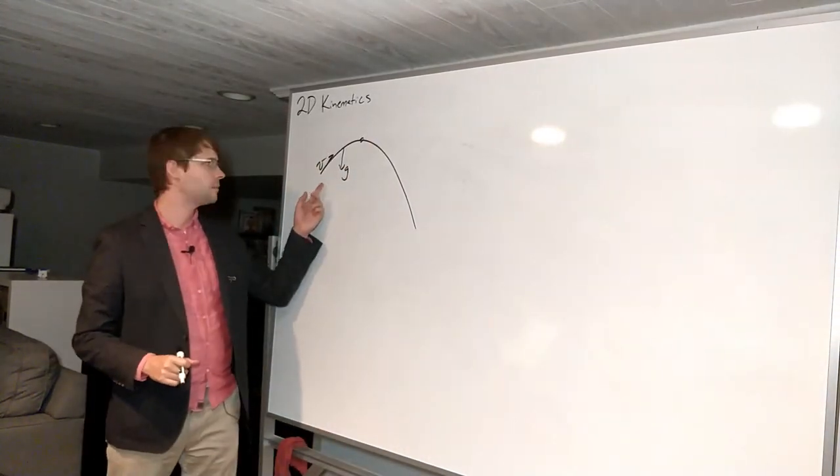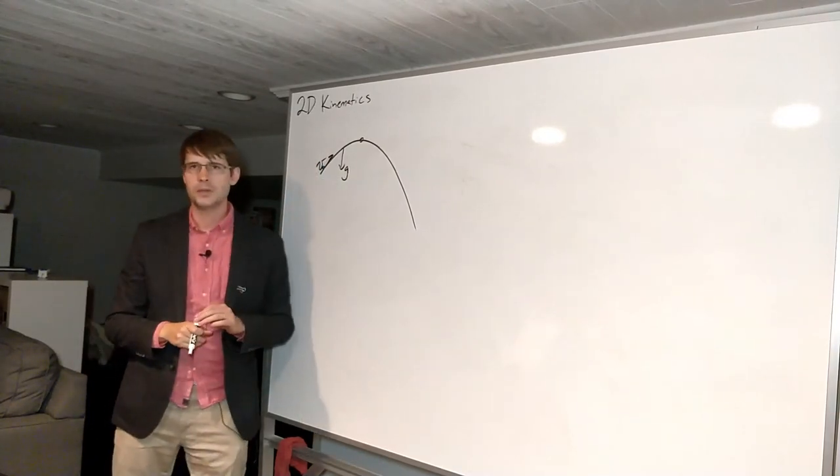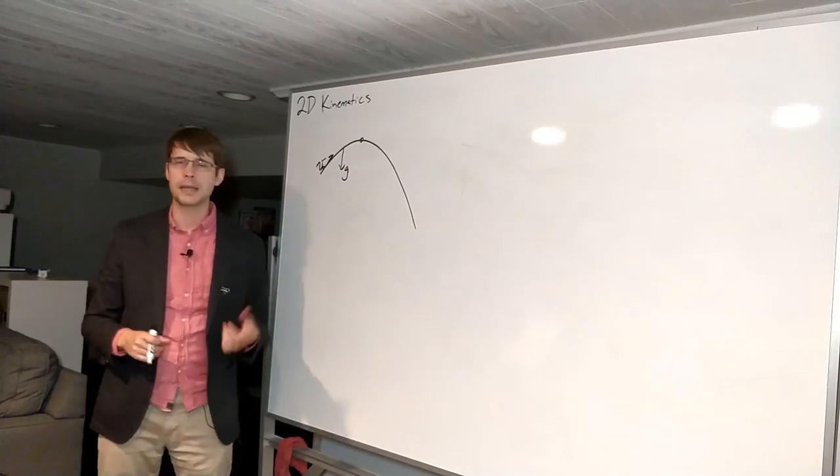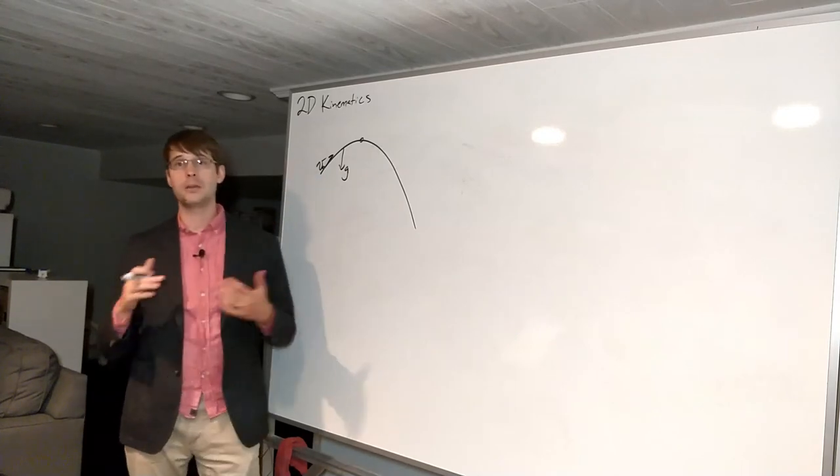If you look back at our example here, we've got an initial velocity going up and to the right. So we would have to break that velocity down if this was say 25 meters per second at this angle, we'd have to break it down into x and y components. Those would be our initial x and our initial y velocities.